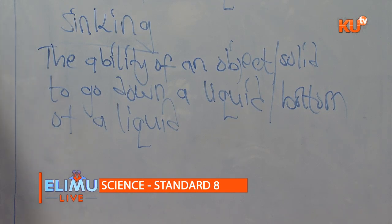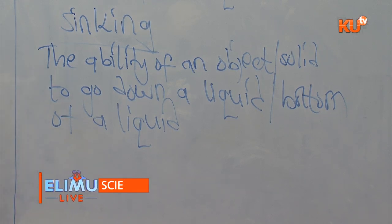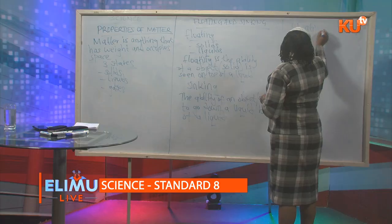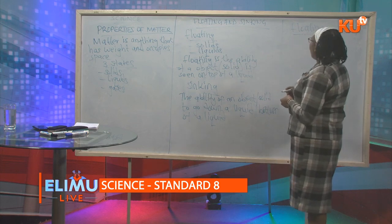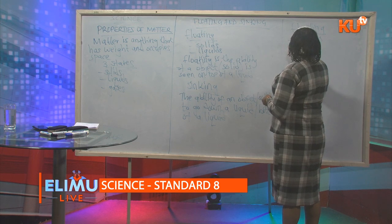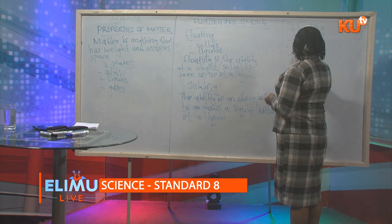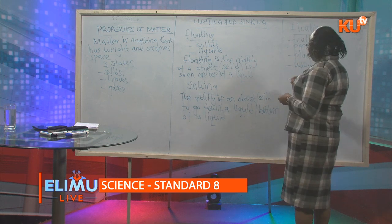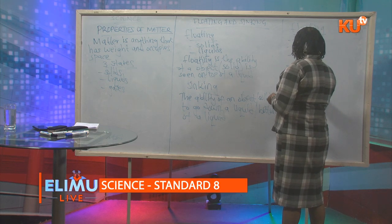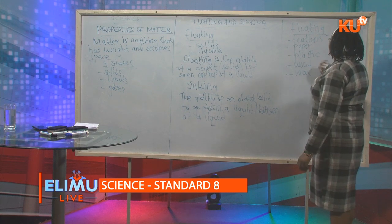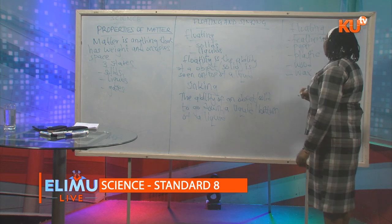There are many solids or objects that can float. For example, we have feathers, we have paper, we have objects made of plastic, we have objects made of wood, and we have objects made of wax. All these items usually float and they are called floaters.